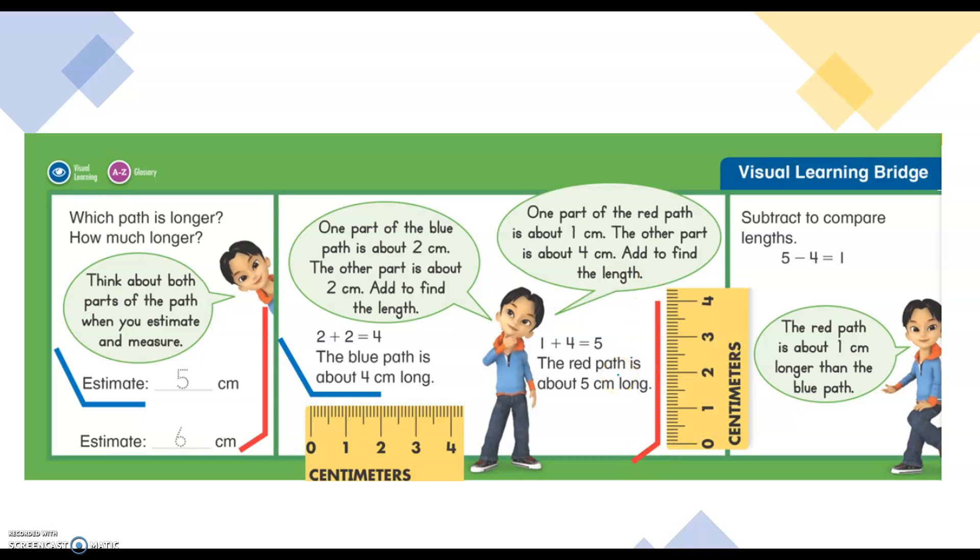I know that four is less than five, so the blue is shorter than the red. We can subtract to compare the length, so we have the five centimeters minus four is one. The red path is about one centimeter longer than the blue path.